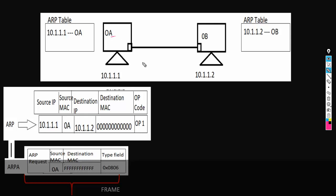To communicate with Machine B, Machine A should have the MAC address of Machine B. For that, Machine A will generate an ARP request message which will contain source IP, source MAC, destination IP, destination MAC, and opcode. If the opcode is 1, it means it is an ARP request.